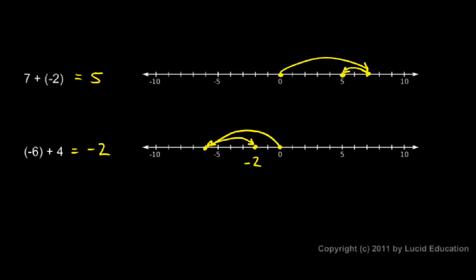In this example, we look at these two numbers and just think about which one is bigger in an absolute sense. The 6 and the 4: 6 is bigger and the 6 here is negative, so the answer is negative.